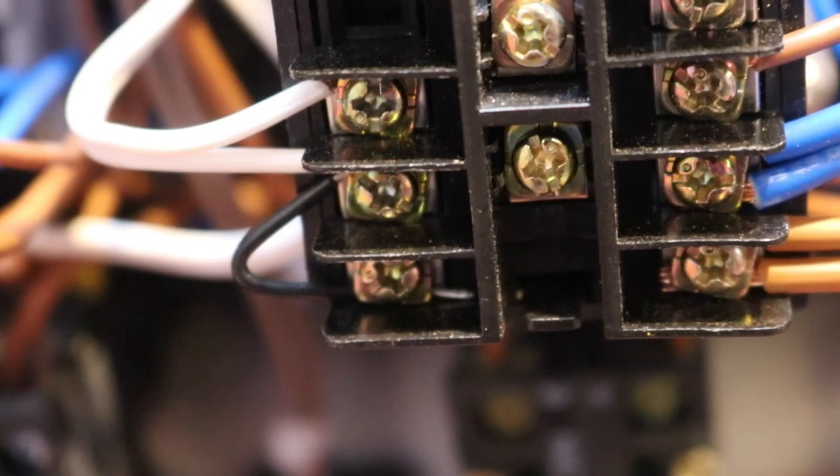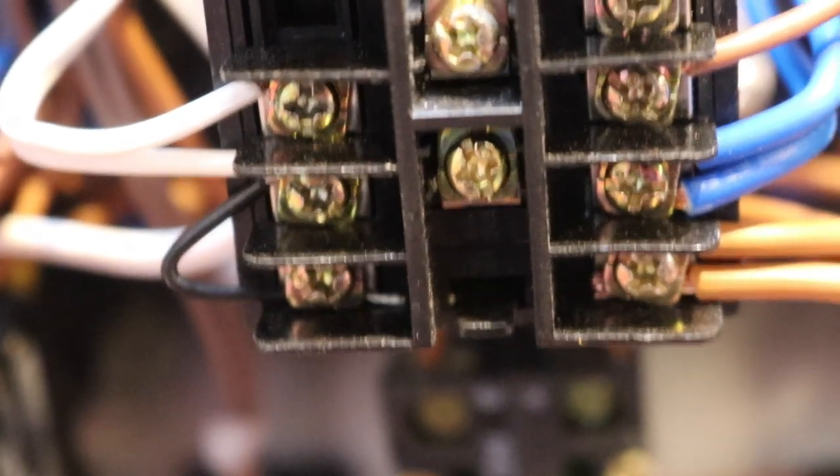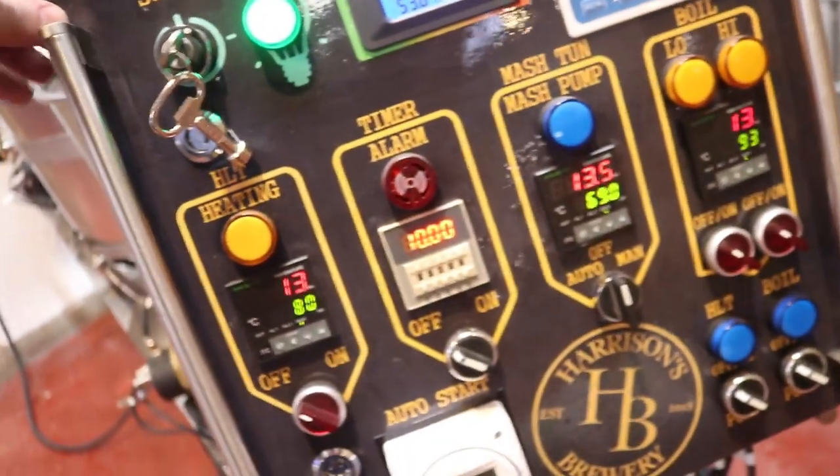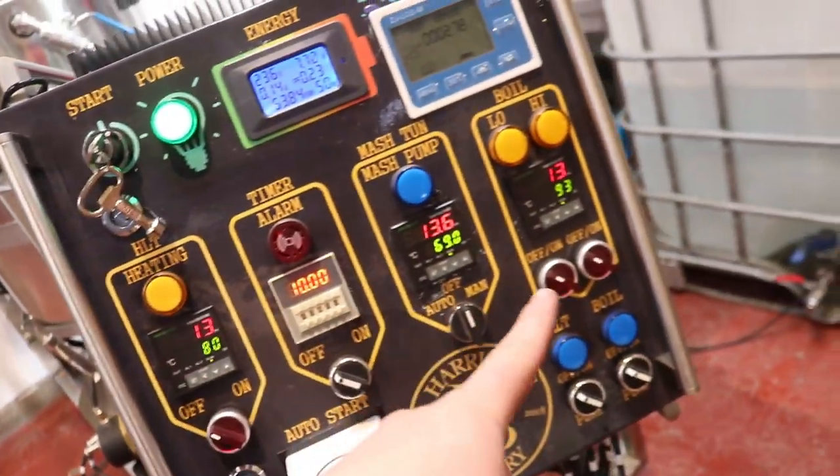Terminals 4 and 5, and that works on the K-type and the PT100. So we've got PT100 for the mash and then K-type thermocouples for the HLT and boil, and by doing that the temperature readouts now are regulated.